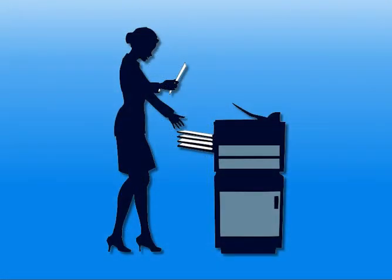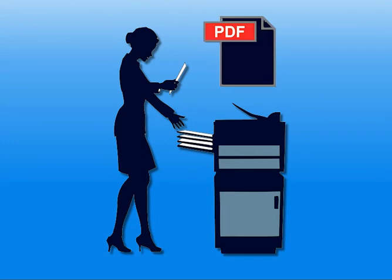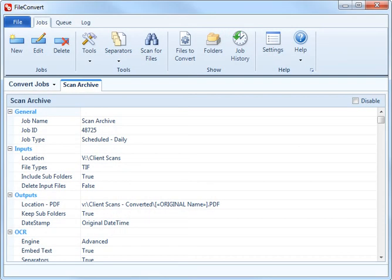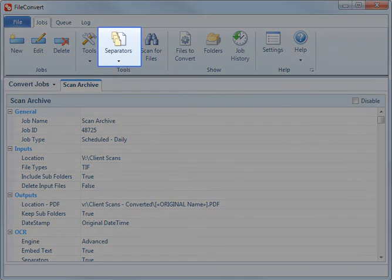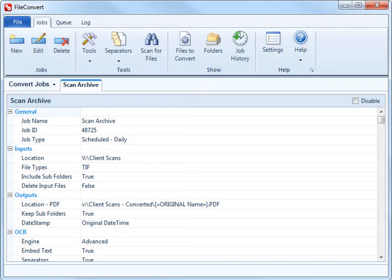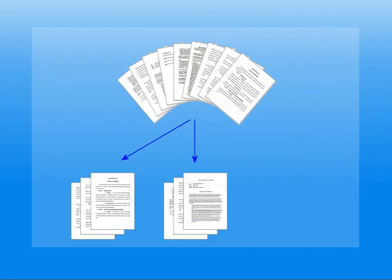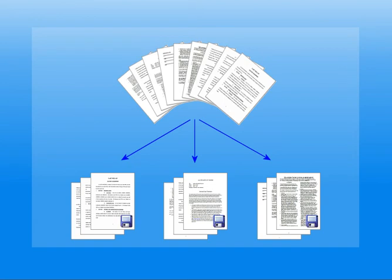James's office also scans new documents by the dozen. He needs a second job that will watch for new scans from the network scanner and convert them to searchable PDF. This job will also take advantage of FileConvert's separator technology. The office uses separators to break up stacks of scanned pages into individual documents and save them automatically. It sounds complicated, but they picked it up very quickly.